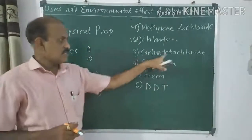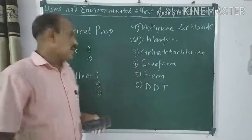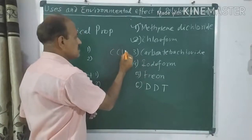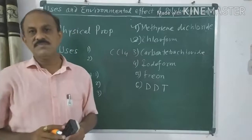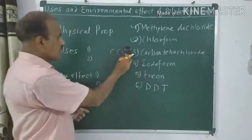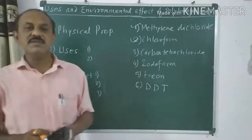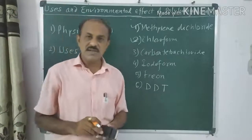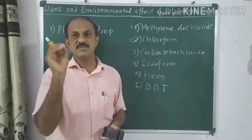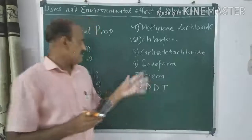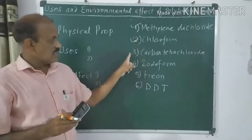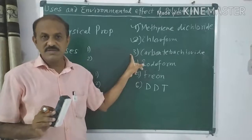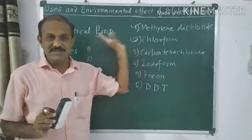The next polyhalogen compound is carbon tetrachloride, which has the formula CCl₄. Its physical property: carbon tetrachloride is also a colorless liquid with a sweet smell — the same physical property as the first three compounds. This is to be noted.